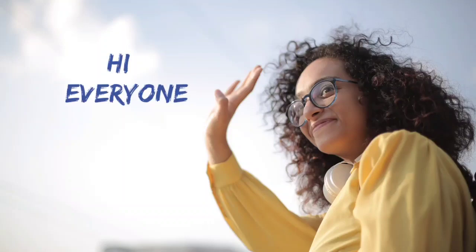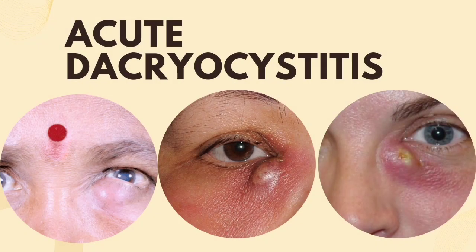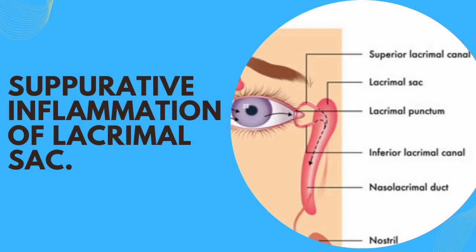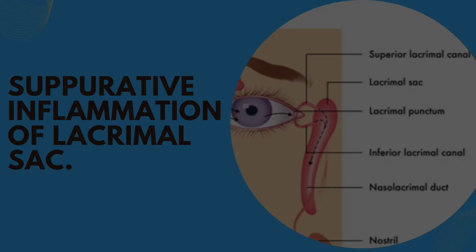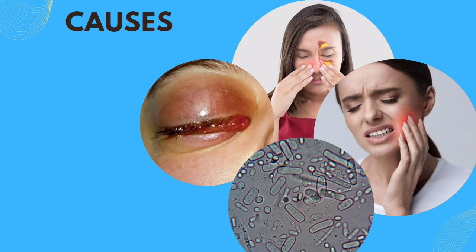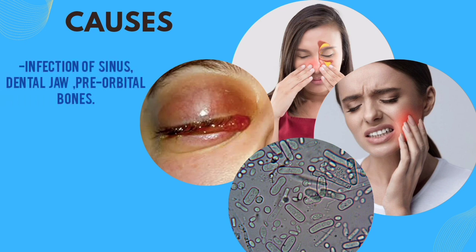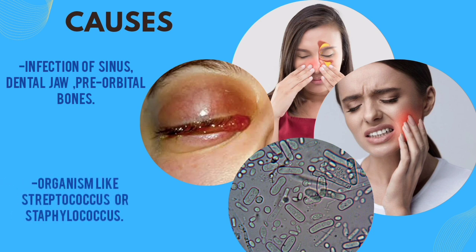Hi everyone. In this episode we'll discuss acute dacrocystitis. Acute dacrocystitis is an acute suppurative inflammation of the lacrimal sac. It is mainly caused due to infections of the surrounding structures like infections of the sinus, dental jaw, orbital bone, etc. The organisms responsible are streptococcus or staphylococcus.